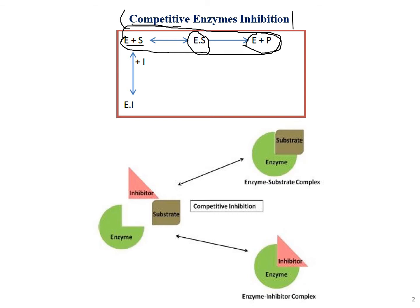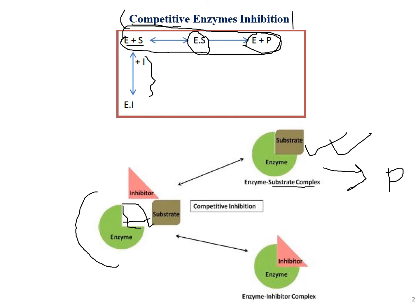As we see in the diagram, this is the active site of the enzyme. When the substrate binds here, it leads to the formation of the enzyme-substrate complex, which later leads to the formation of product. But in this case, there is competition — the substrate and the inhibitor compete simultaneously for the active site.